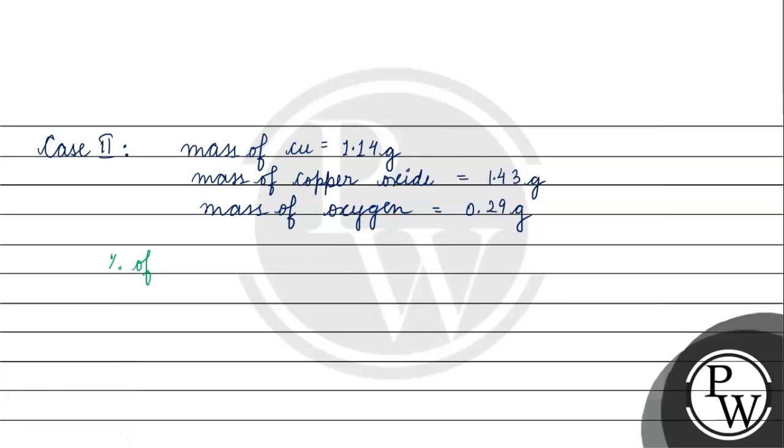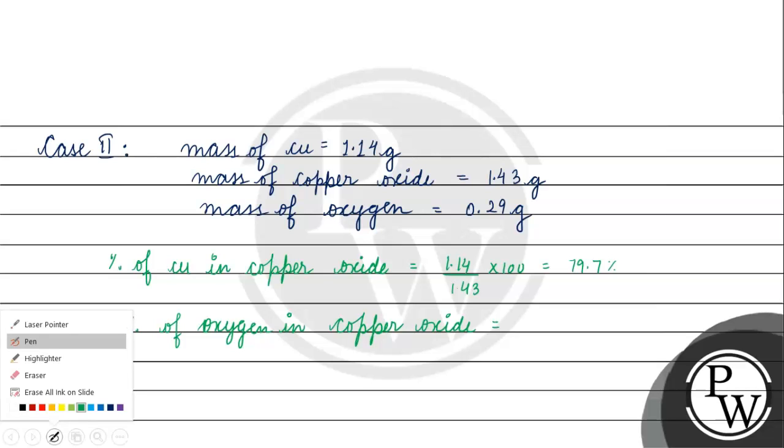Percentage of copper in copper oxide: mass of copper by mass of copper oxide gives us 79.7%. Now let's check mass percentage of oxygen in copper oxide. 0.29 by 1.43 into 100 is basically equals to 20.3%.